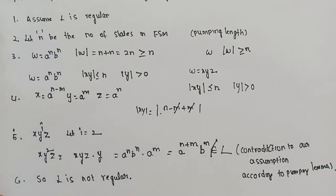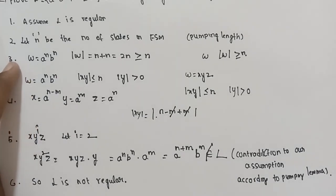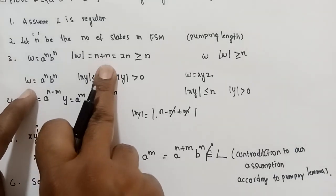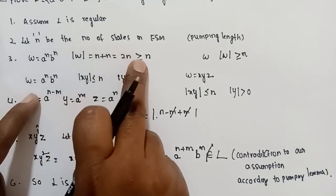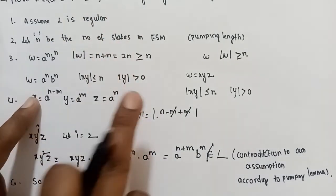So this is the way we can use the pumping lemma to prove a particular language is not regular. To summarize the steps: first, assume L is regular; then let n be the constant equal to the number of states in the finite automaton; then select a string whose length is greater than the constant; apply the pumping lemma conditions; derive a contradiction; and conclude L is not regular.